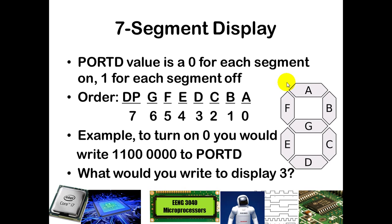Port D determines which segments in the currently active display should be on. The logic is a little backwards from what you might expect: you put a zero for segments you want on and a one for segments you want off. The order of bits in port D is important. Bit 7, the most significant bit, is for the decimal point, which we will leave off for most things in this class. The standard segment naming goes: A at the top, then B, C, D, E, F going clockwise around the perimeter, and G is the center crossbar.